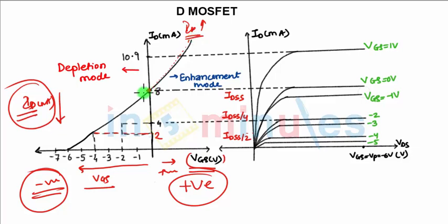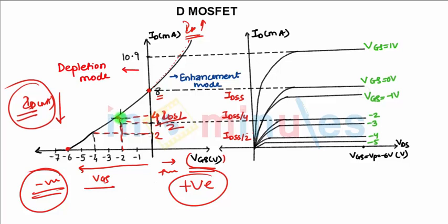As you know how we draw the transfer characteristics, we find IDSS — if it is given as 8 mA and VP is given as minus 6 — then we can plot the transfer characteristics by finding the value of ID. For IDSS/2 we get 8 by 2, that is 4 mA, and for that value we find VP. Similarly for VP/2, there are two conditions, and from these two points we can join the transfer characteristics.